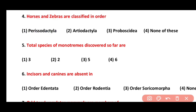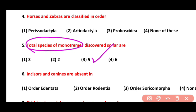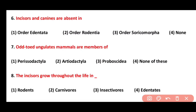Question 5. What is the total number of monotreme species discovered so far? Options: 3, 2, 5, or 6. Correct answer is option 3. Total species of monotremes discovered so far are 5: 1 species of Ornithorhynchus (duck-billed platypus) and 4 species of spiny anteater.